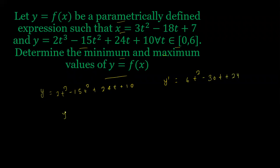If I factor out 6, then it will be t² - 5t + 4. So my dy/dt will be 6 times (t - 1)(t - 4).